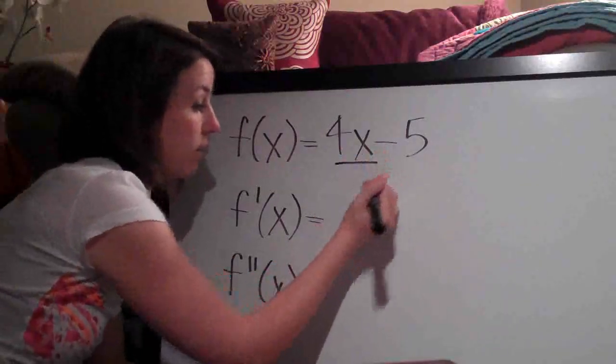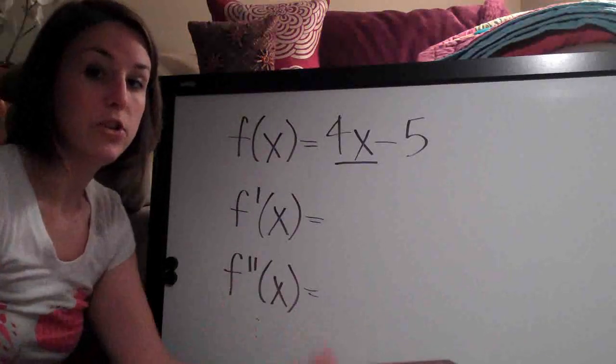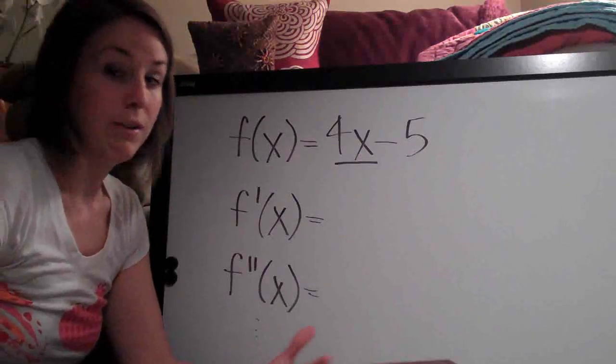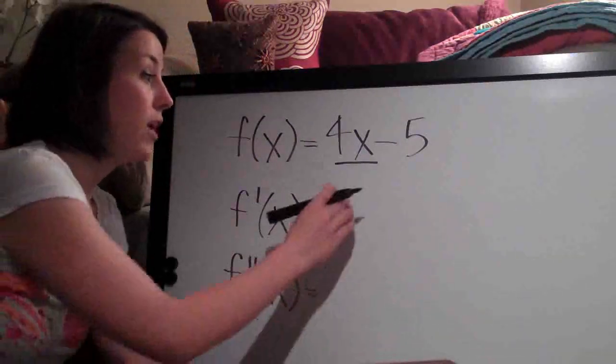So we're going to start with 4x. The derivative of 4x, and this will become intuitive to you, is simply 4. The derivative of 2x would be 2, of 10x would be 10, so that will become intuitive.